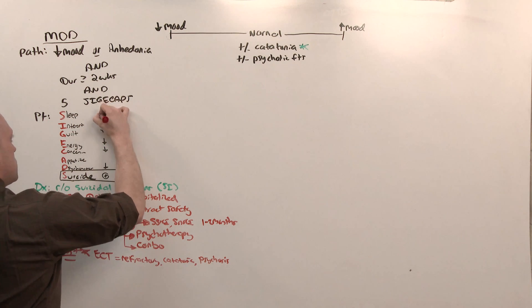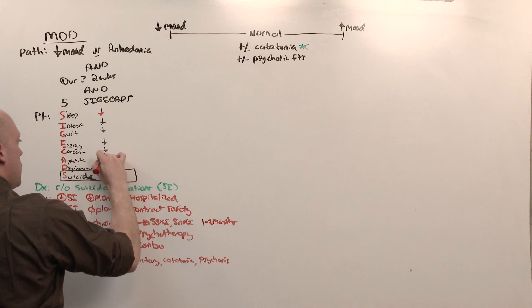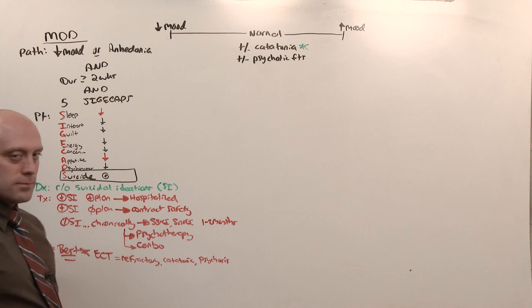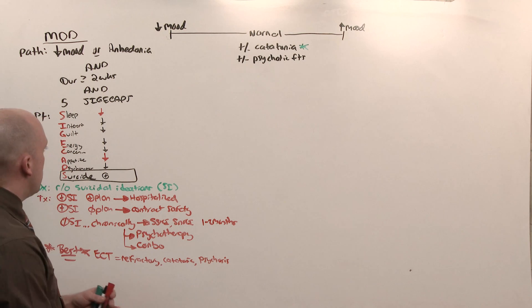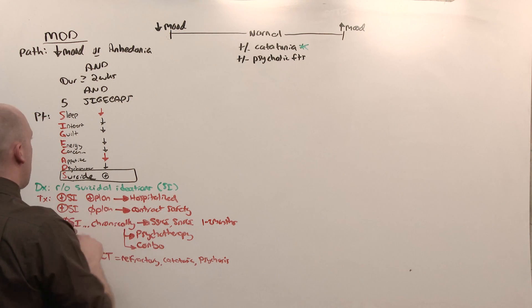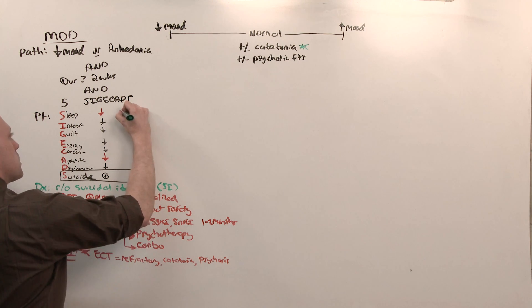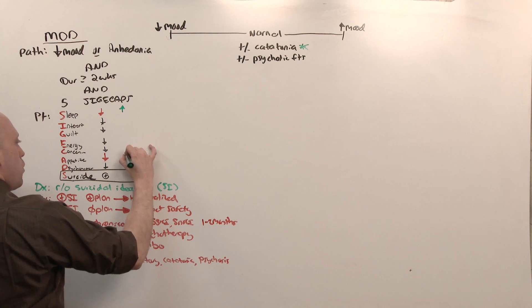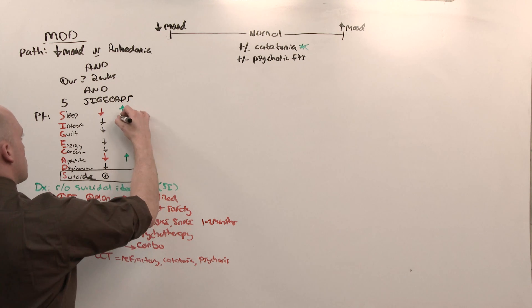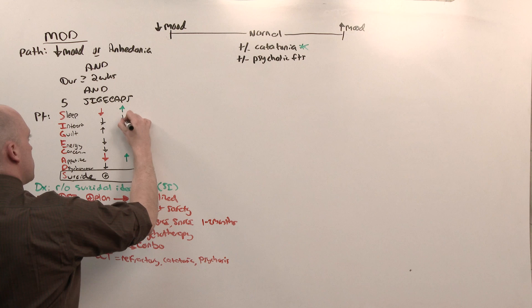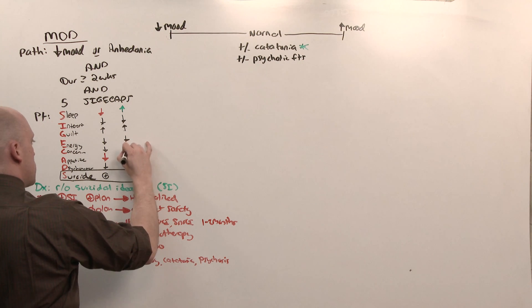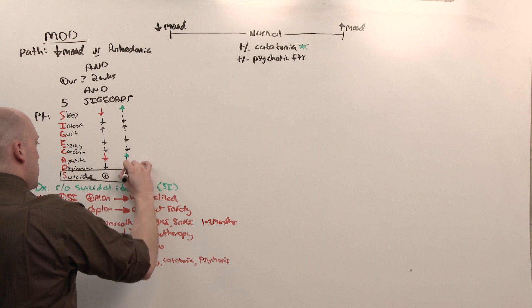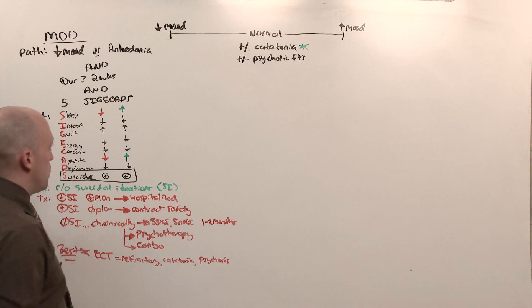Typical depression has less sleep and less appetite. So-called atypical depression has a change in the vegetative symptoms - the ones I marked. Sleep goes up, appetite and weight go up. Everything else remains the same in the sense that there is decreased interest, lots of guilt, decreased energy, decreased concentration, and psychomotor retardation with, potentially, suicidal thoughts.